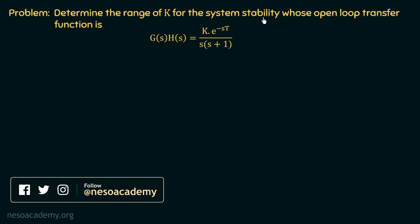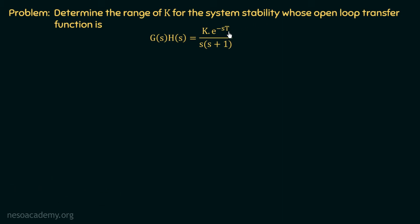We can see this open loop transfer function is looking somewhat different — there is an exponential term here. The open loop transfer function is k multiplied with e to the power minus st over s multiplied with s plus 1. So this is the extra exponential term in this open loop transfer function. We will discuss how we can handle this exponential term and find out the range of k for the system stability by applying the RH criteria.